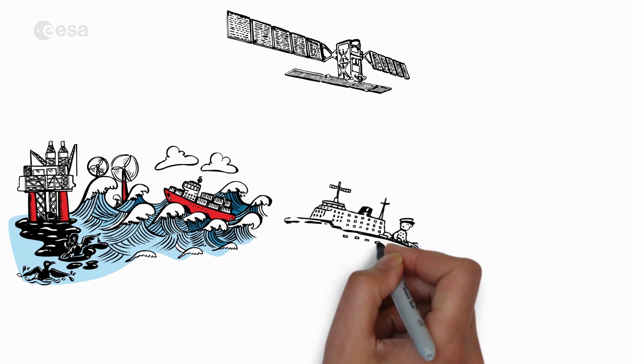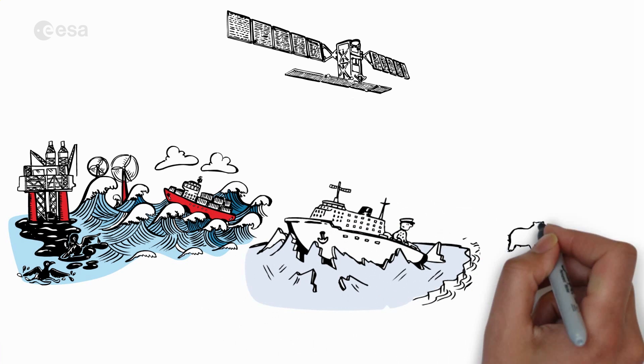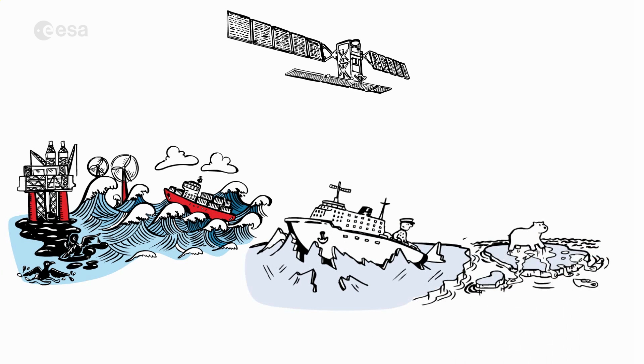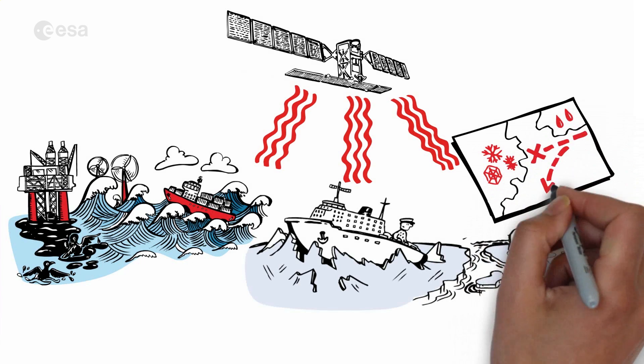And it shows where the pack ice has grown too thick for even the heaviest icebreakers. Or detect large ice sheets growing thin and porous due to global warming, simply by watching the ice from space and sending high-resolution images down to the ground.